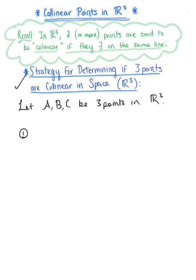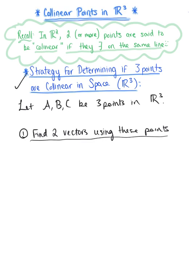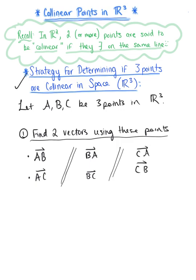The first thing we need to do is find two vectors using these three points. For simplicity, I'm always going to use the same initial point. So one vector will be AB and the other vector will be AC. It helps to use the same initial point. Keep in mind you could also use BA and BC, or AC and AB — any of these three combinations will work. For the sake of this strategy, let's use vectors AB and AC.